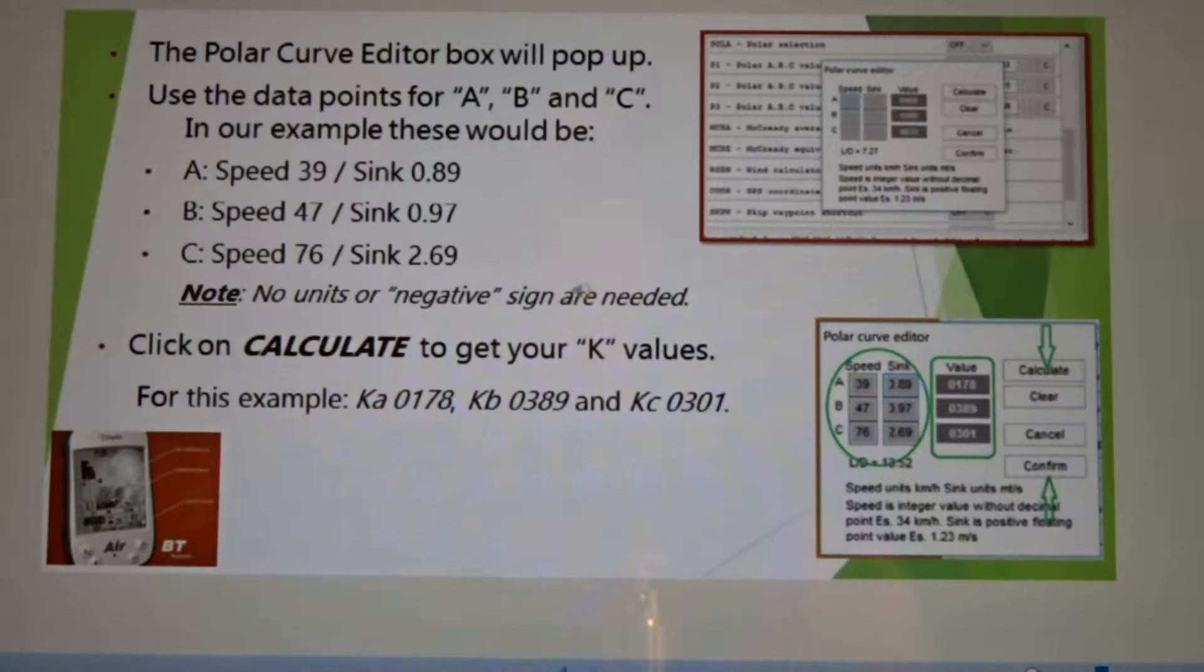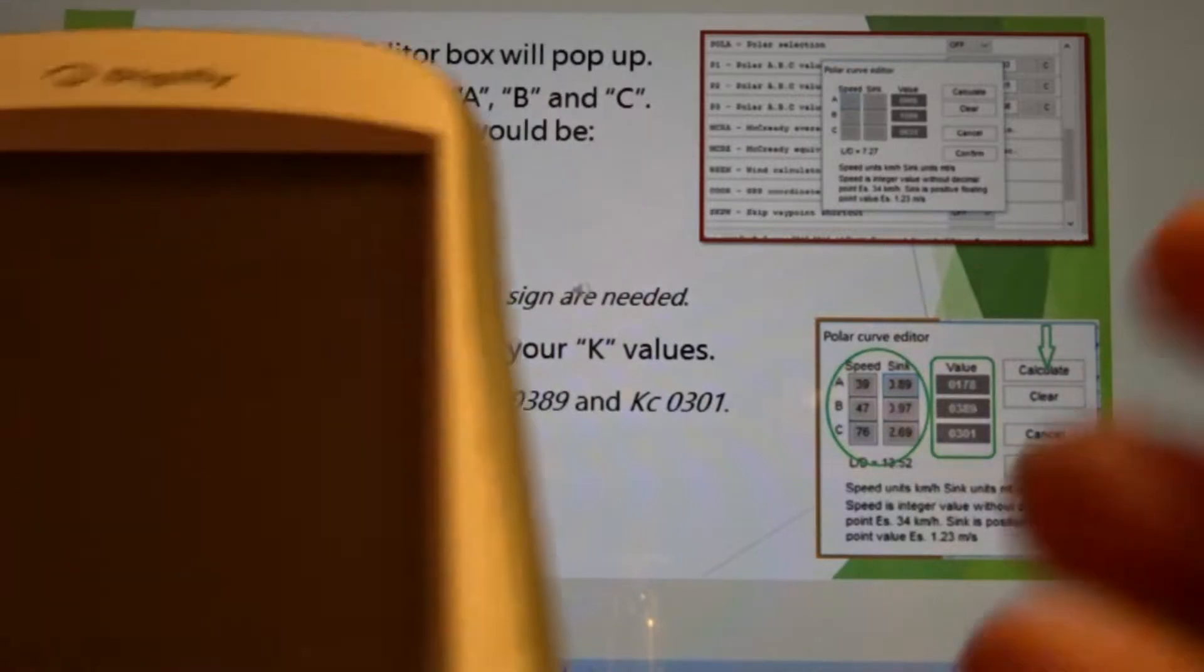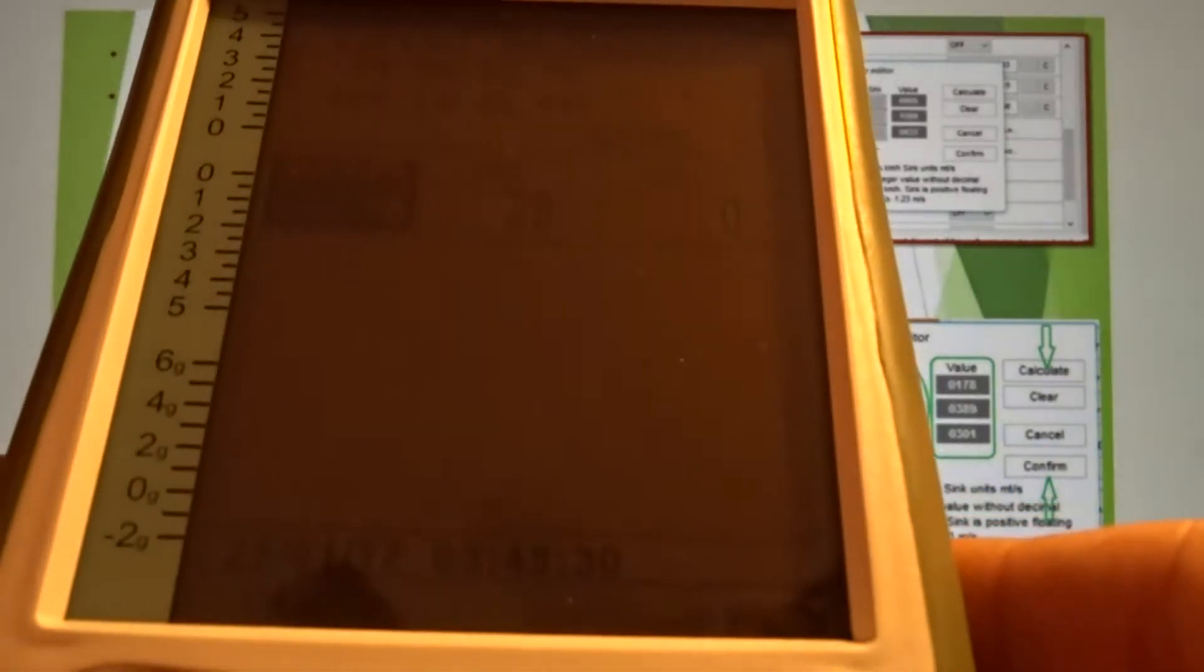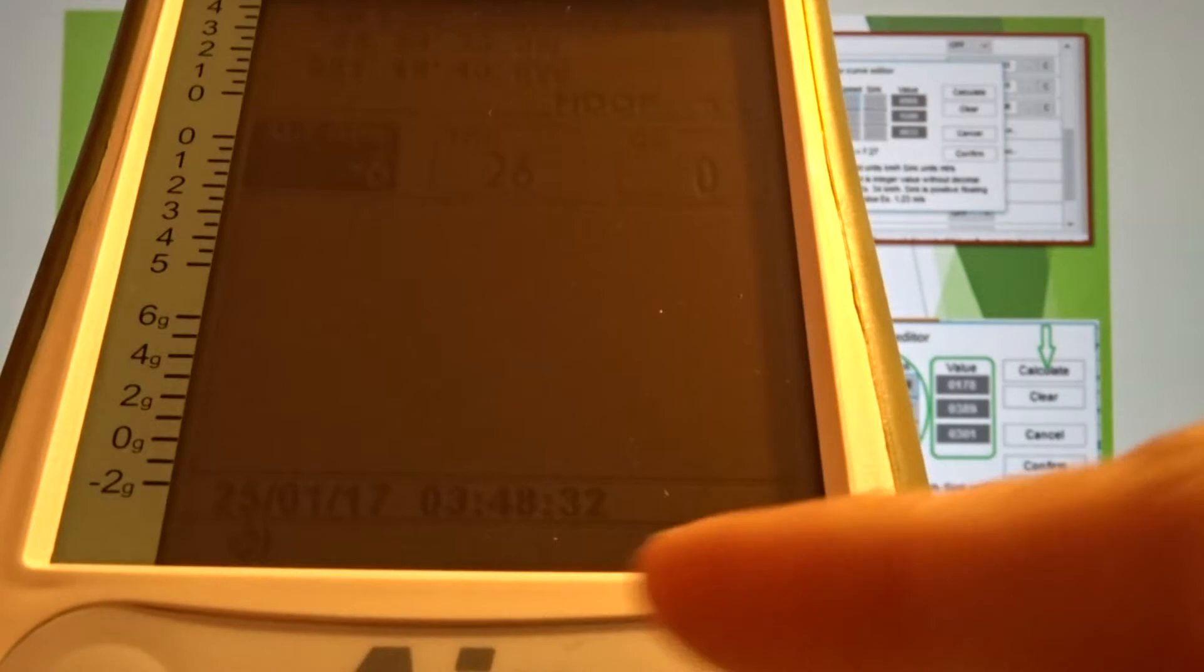To manually put these values onto your DigiFly, you simply get your DigiFly, turn it on. Mine is on, it already has GPS coverage.